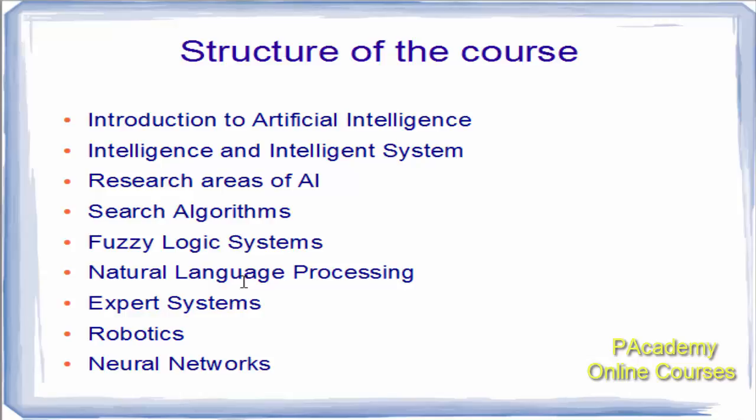Then there is the expert system. An expert system is an artificially intelligent system which possesses expert knowledge in a specific domain area. Then there is robotics — the actual implementation of artificially intelligent systems in the form of robots. Robots are artificially intelligent entities which use the concept of an AI system to perform various functions.